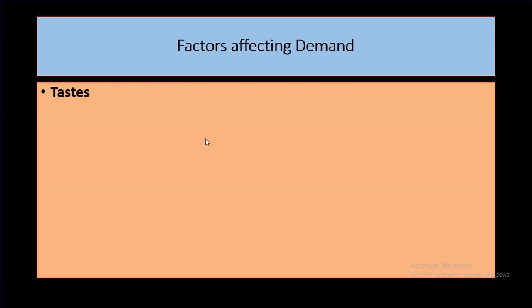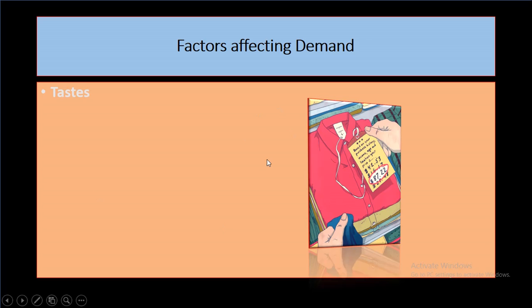The next factor affecting demand is taste, also known as fashion. Products which are in fashion or in the taste of people — consumers start demanding more even though prices are increasing. And if the product goes out of fashion, if people no longer like it and their taste changes, they start disliking it and purchase less even if the price is lower, because the product is out of fashion.